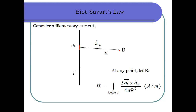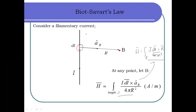B is a point of interest. Based on the previous equation, the H field at point B can be calculated by the equation where we have I DL vector cross product with R. I prefer to use the vector form: H field equals the integration of I DL vector cross the vector R over 4π R³. The integration must be taken along the length of your filament current.